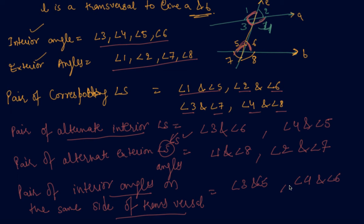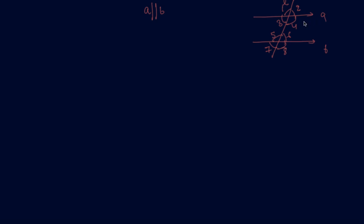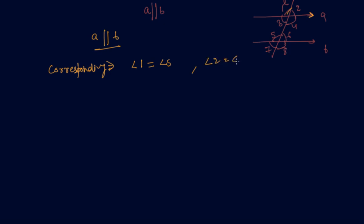Now let us discuss the special case when these two lines are parallel — this is a special case of transversal angles in which line A is parallel to line B. For the corresponding angles: angle 1 equals angle 5, angle 2 equals angle 6, angle 3 equals angle 7, and angle 4 equals angle 8. So the corresponding pair of angles are equal in the case of parallel lines.